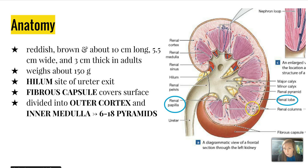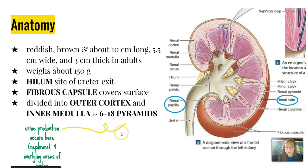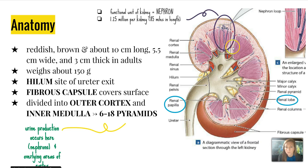One renal lobe consists of the cortex and the pyramid it encompasses of that inner medulla. Urine production occurs here in the pyramids, and the nephrons are involved with that, as well as the overlying areas of the cortex within that lobe. One functional unit of the kidney — a nephron — there are about 1.25 million per kidney, which, if stretched out, would be 85 miles in length.